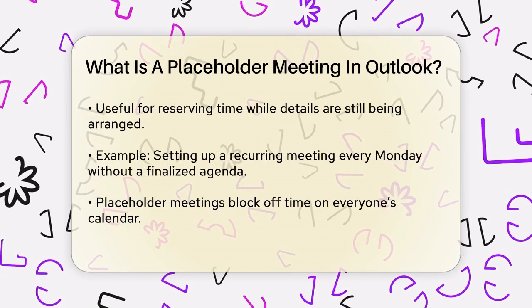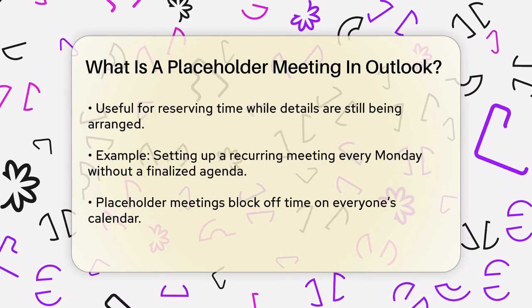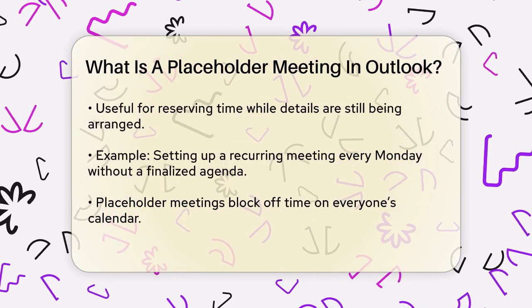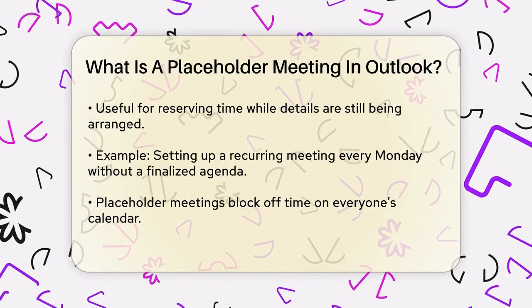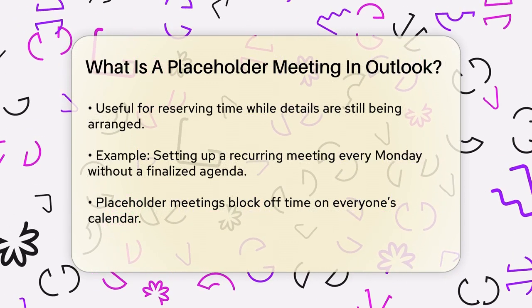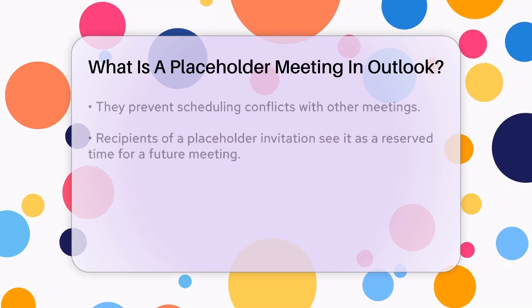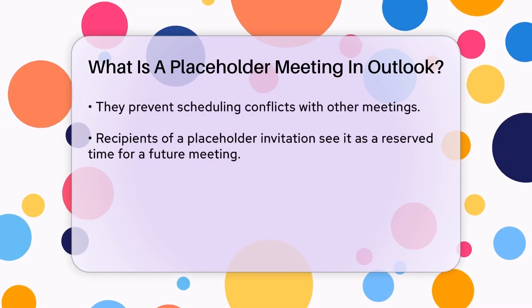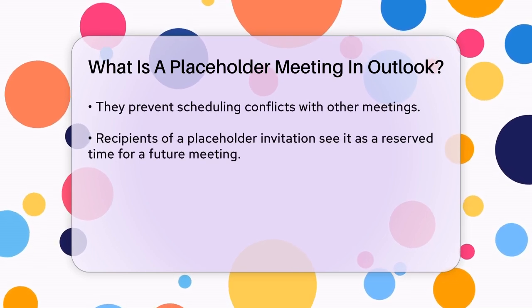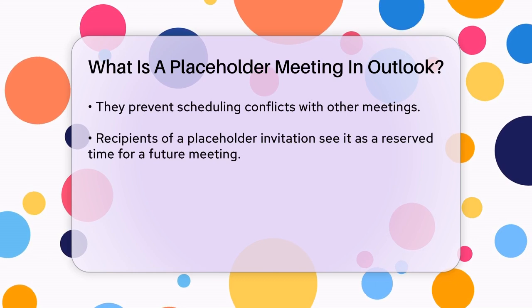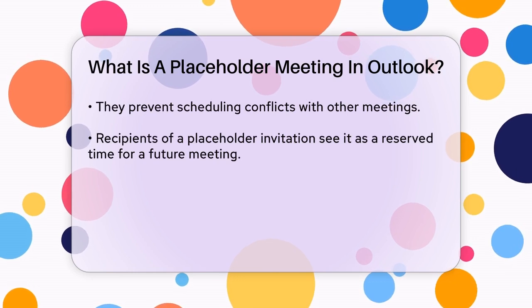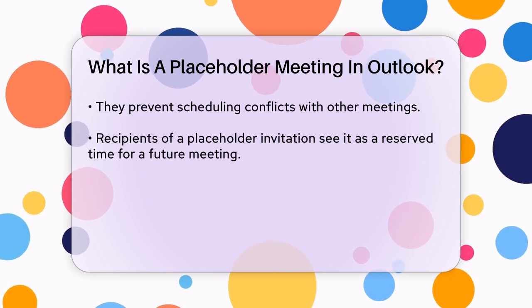For example, if you're organizing a recurring meeting that happens every Monday, but you haven't finalized the agenda or the list of attendees, you can set up a placeholder meeting. This ensures that the time is blocked off on everyone's calendar, preventing any other meetings from being scheduled at the same time.